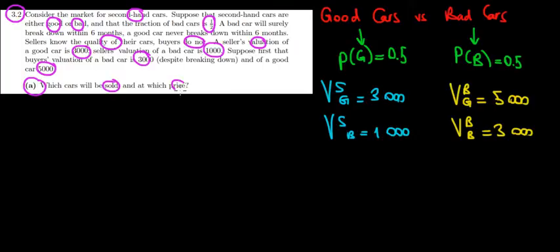In part A, which cars will be sold and at which price? We have all the data written here. What does it mean to have a fraction of bad cars of 1/2? It means the probability of buying a bad car is 0.5, and by definition the remaining probability of 0.5 gives us a good car.